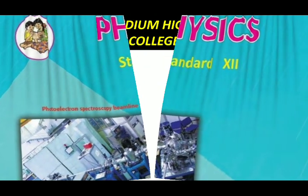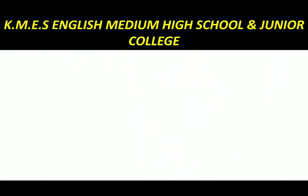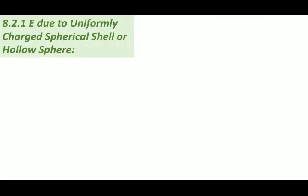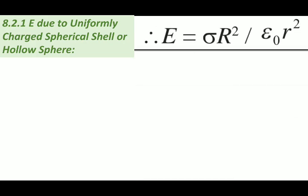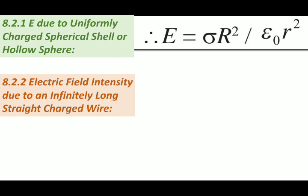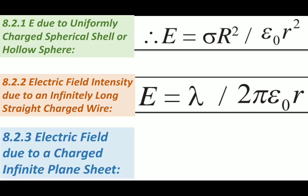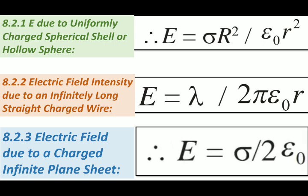Assalamualaikum, dear students of class 12. Let's continue our topic, chapter number eight, electrostatics. In electrostatics we had studied regarding electric field intensity due to a uniformly charged spherical shell or hollow sphere, and we derived the formula: E equals rho r squared upon epsilon naught r squared. Number two, electric field intensity due to an infinitely long straight charged wire: E equals lambda upon two pi epsilon naught r. Number three, electric field due to an infinite charged plane sheet: E equals sigma upon two epsilon naught. All these three are applications of Gauss's law.